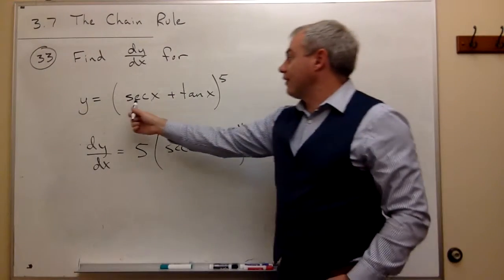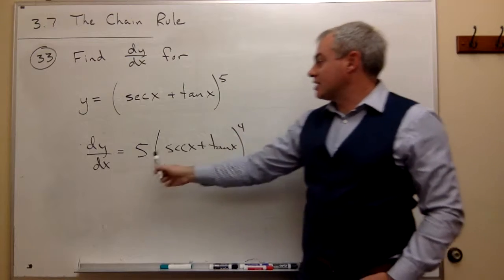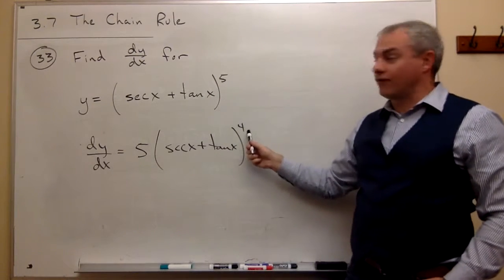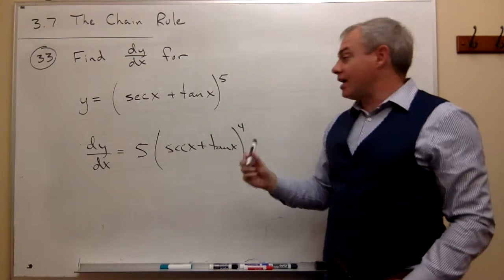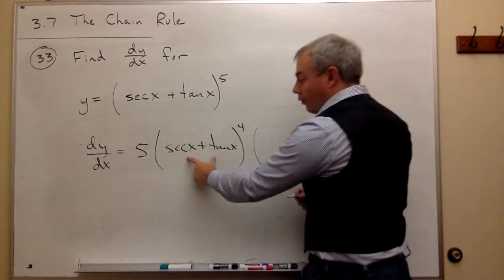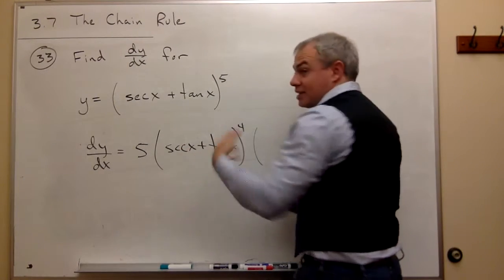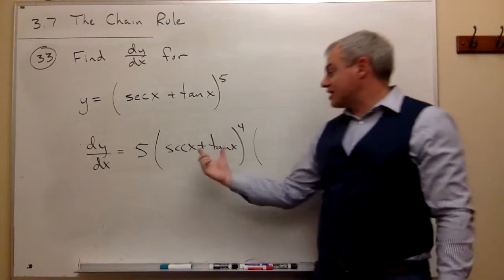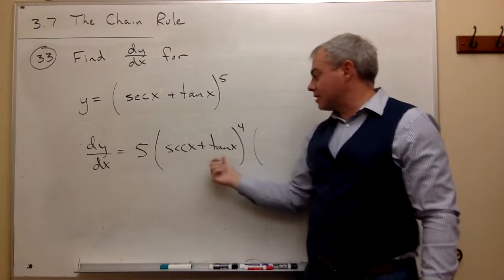So the derivative of something to the fifth is five somethings to the fourth times the derivative of what was inside or the something. What was that in this case? It was secant x plus tangent x.